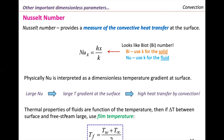Thermal properties of fluids are a function of temperature. If the delta T between the surface and the free stream are very large, we get the film temperature and then we read the properties with the film temperature. Why? Because we are evaluating convection — that is heat transfer between a solid surface and a fluid in contact with that solid surface.